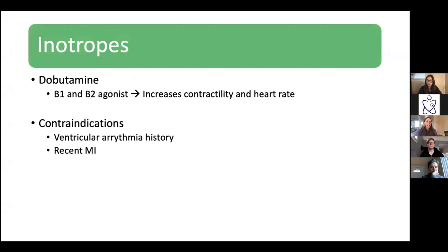If you decide your patient can't exercise, you're deciding between inotropes and vasodilators. Our inotrope option is dobutamine — a beta-1 and beta-2 agonist that increases contractility and heart rate. The big contraindications to dobutamine for stress testing are people who've had a recent MI or who have a history of ventricular arrhythmia. Most often a dobutamine stress test is paired with an echo.